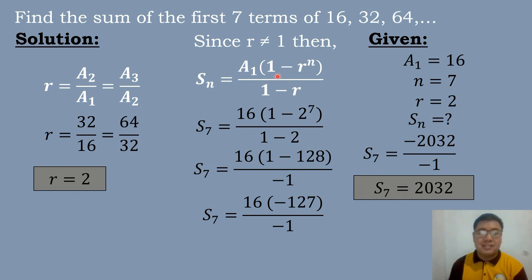Thus, the sum of the first 7 terms of 16, 32, 64, and so on is 2,032.